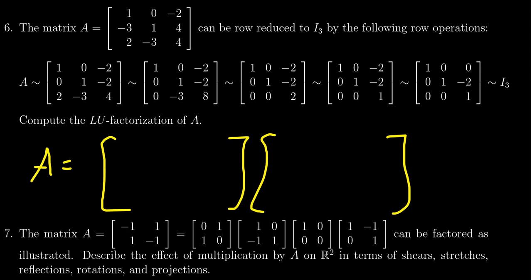So A is not in echelon form. The first echelon form is going to be right here. This is echelon form. It's not row reduced echelon form, but that's fine. To get the LU factorization, we don't do any row operations except for forward phase replacements.